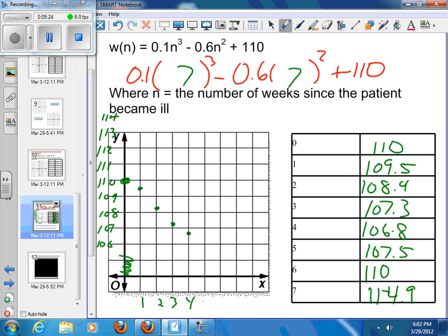Five weeks, I'm at 107.5, so I'm gaining my weight back now. Six weeks, I'm back up at the 110. So as soon as I get healthy, I put that weight right back on. And at seven weeks, I'm all the way up at 114.